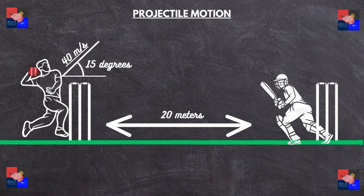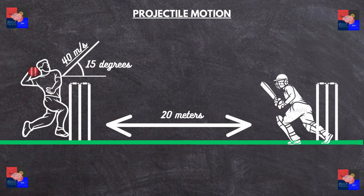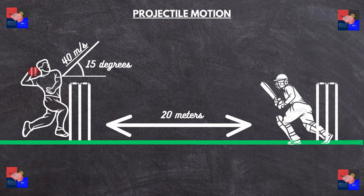So we know the equations and all that, so let's just take a look at how we can calculate projectile motion. Say you and your friends were playing cricket, and you the bowler are throwing the ball at precisely 15 degrees at a velocity of 40 meters per second or 144 kilometers per hour.